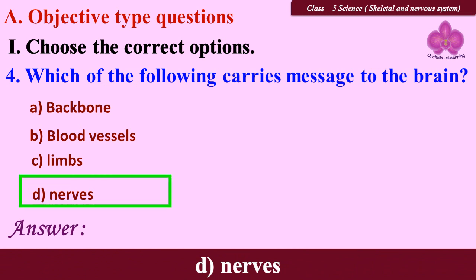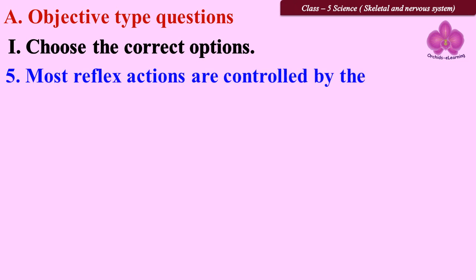Answer: D. nerves. Question 5: Most reflex actions are controlled by the options: A. spinal cord, B. brain, C. nerves, D. blood vessels. Answer: A. spinal cord.